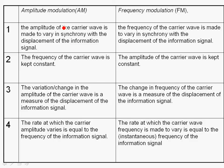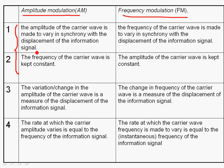Last time we discussed amplitude modulation and frequency modulation, and I showed you the four properties you can talk about for amplitude modulation. For the exam, if you encounter a question to define amplitude modulation or frequency modulation, if it's for two marks, I suggest you write those two sentences. If it's for more than two marks, and if time permits, write all four points. Please learn these four points and understand what they actually mean.